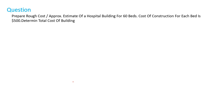In this tutorial we are going to do an example for unit rate estimate. The question is: prepare a rough cost or approximate estimate of a hospital building for 60 beds. Here we have 60 beds, and the cost of construction for each bed is $500.